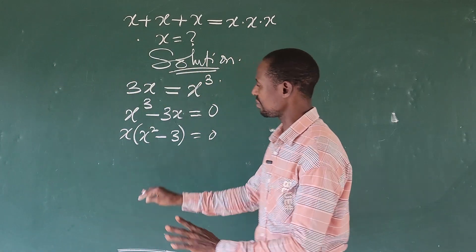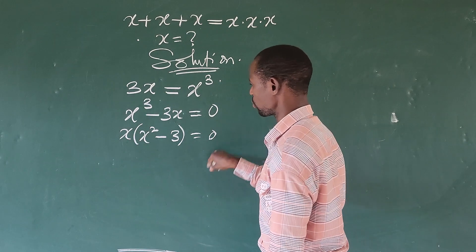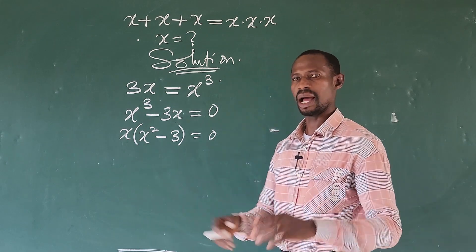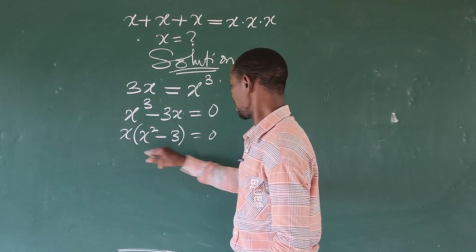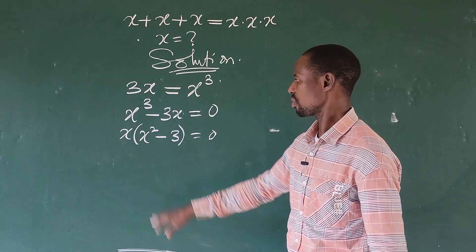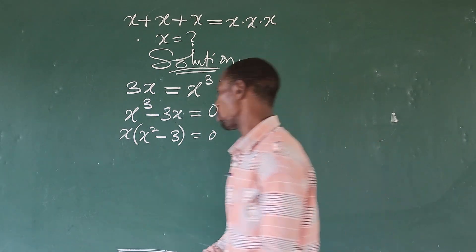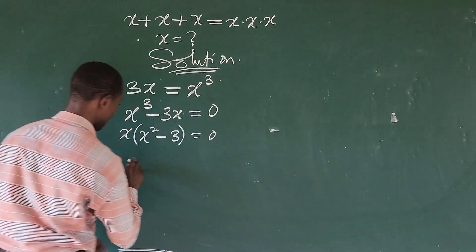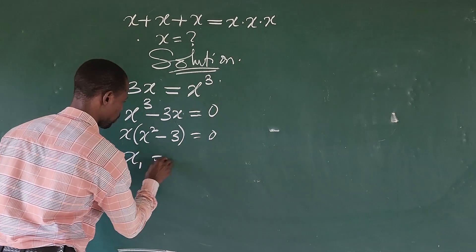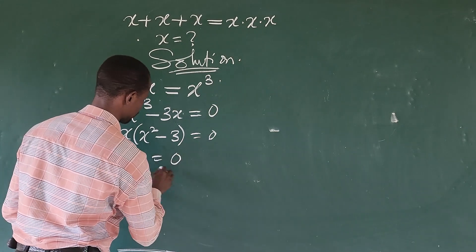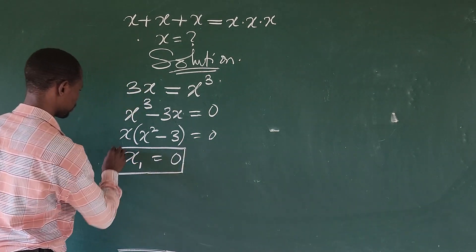Now here we have a product equal to 0. So we apply the zero product rule. We equate each factor to 0. So from here we're going to have x is equal to 0 for case 1.